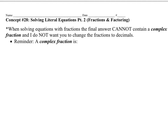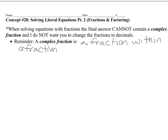One thing whenever you're solving literal equations: we've got to make sure that our final answer does not contain a complex fraction, and I don't want you to change any of the fractions to decimals. A complex fraction is a fraction within a fraction — a fraction over a fraction. For example, you can't have an answer like x equals 2x minus 4 over 2 thirds. You can't have a fraction in the denominator; that's not an answer in simplest form.